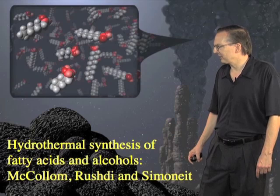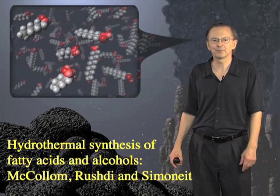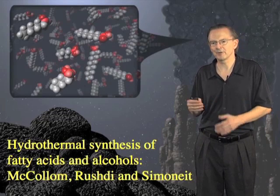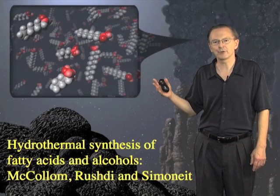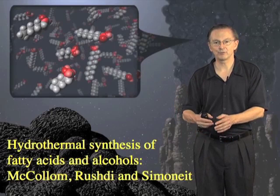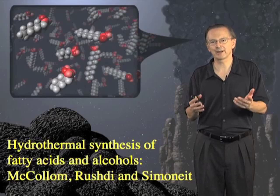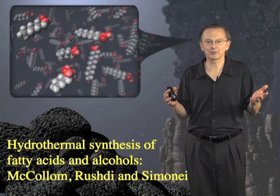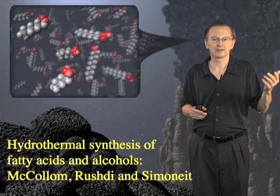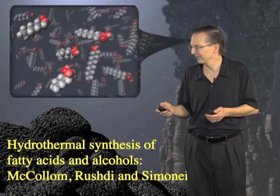So what would be an example of an early Earth environment where something like this could take place? There are a series of experiments from the Simenet lab suggesting that hydrothermal synthesis could happen deep down in regions with high temperature and high pressure, on the surface of catalytic minerals such as transition metal sulfides or oxides. Those reactions would basically turn hydrogen and carbon monoxide into fatty acids and related compounds.